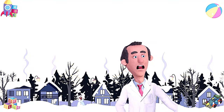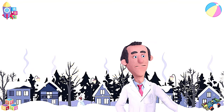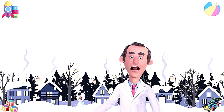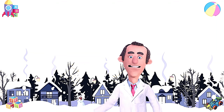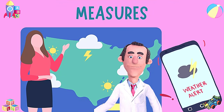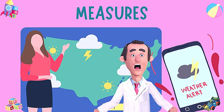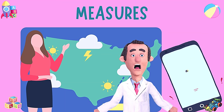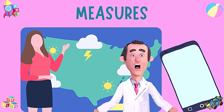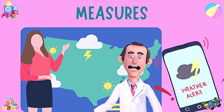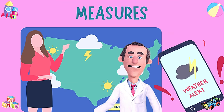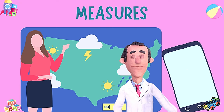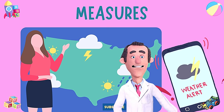We wear warmer clothes and snuggle up with blankets, sipping hot cocoa. Local governments, like superheroes with special tools, work hard to keep everyone safe. A team of scientists keeps a close eye on the sky. They use special tools like text messages, radio announcements, or even sirens to send out alerts.